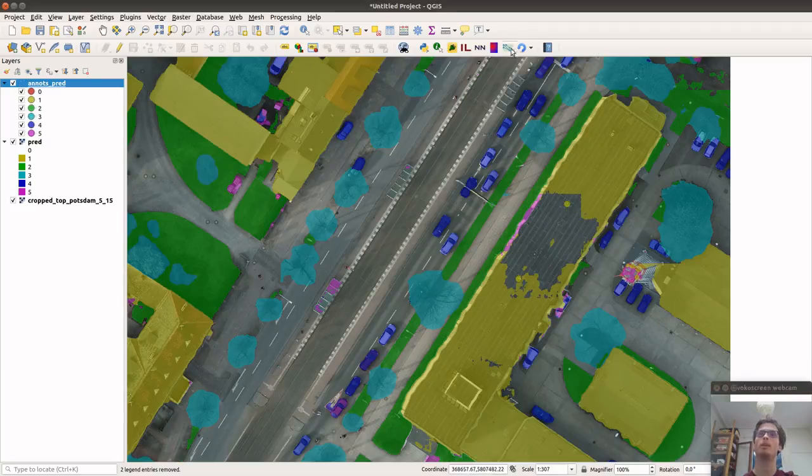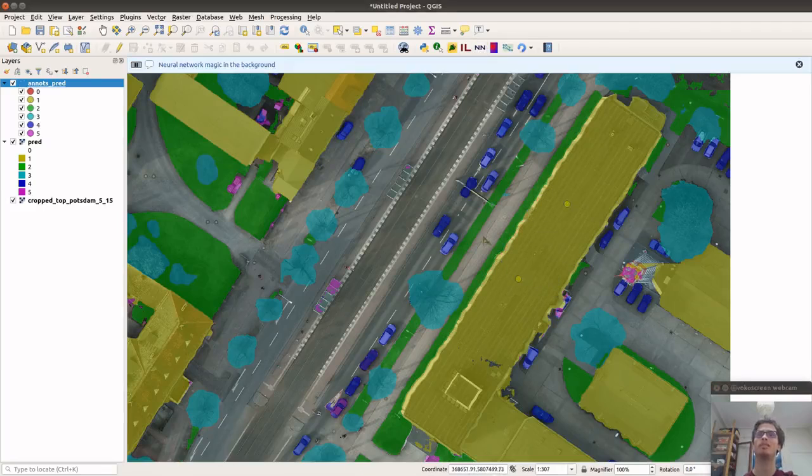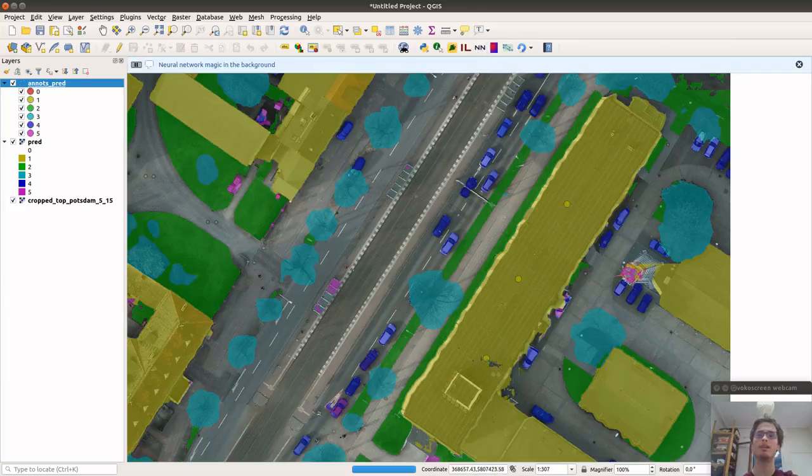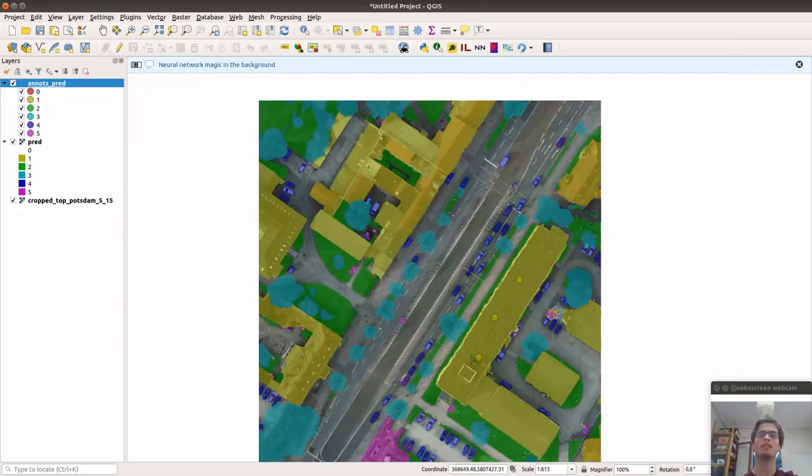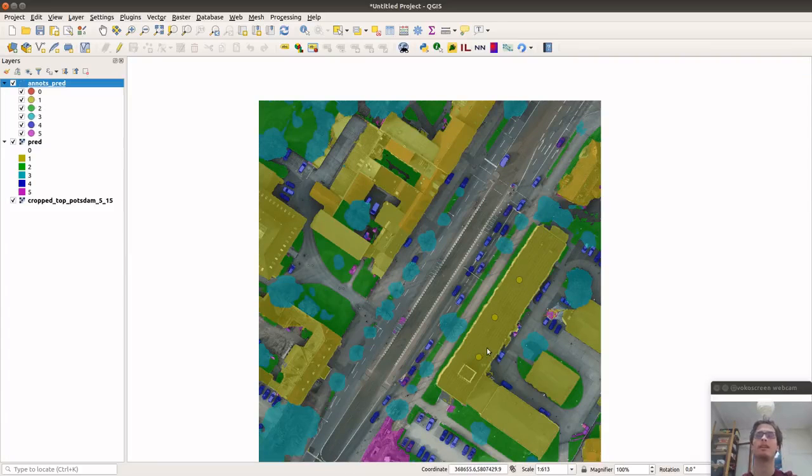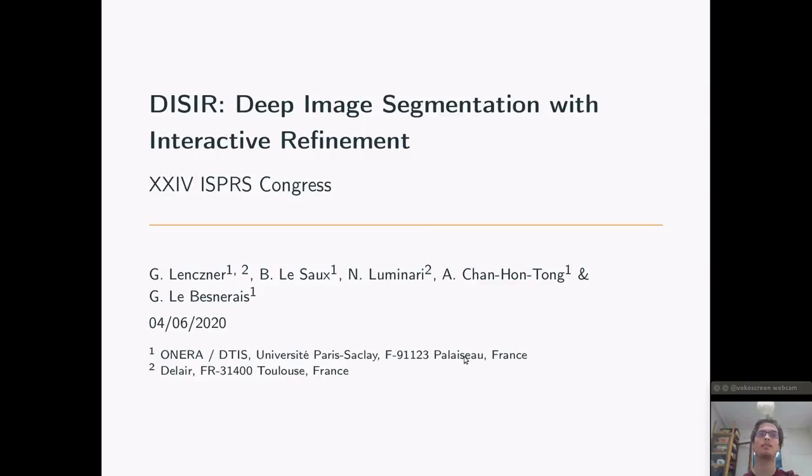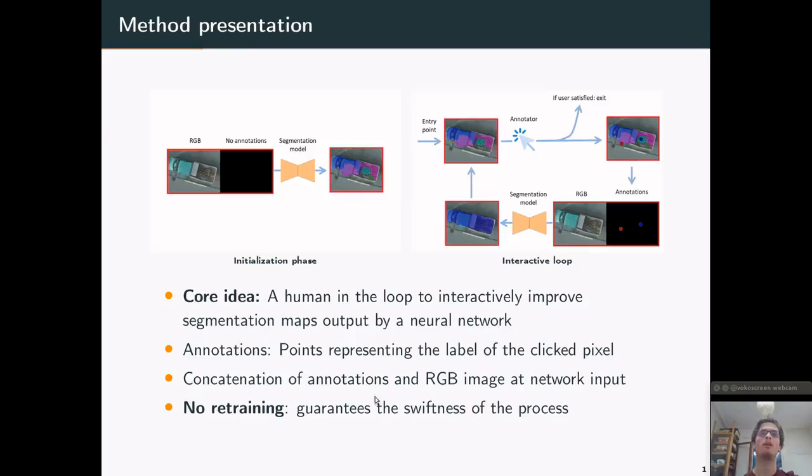So here, I put two building annotations, and the neural network refines the segmentation. And here is a corrected segmentation of this image. As we can see, it's very fast because there is no retraining.